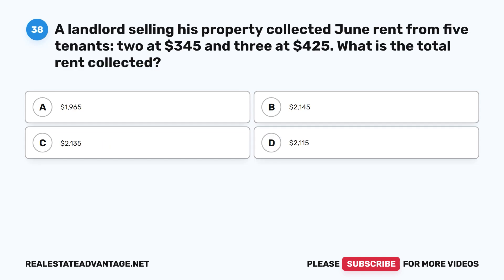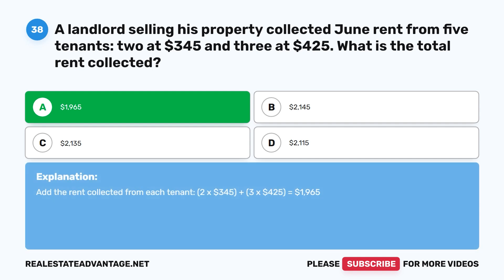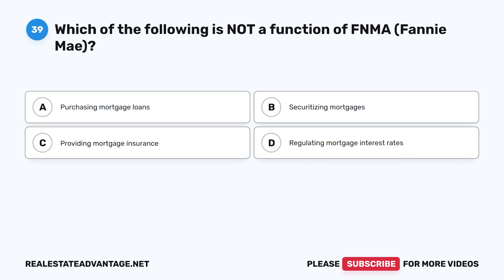Question 38: A landlord selling his property collected June rent from 5 tenants — 2 at $345 and 3 at $425. What is the total rent collected? The total rent: 2 × $345 + 3 × $425 = $690 + $1,275 = $1,965.